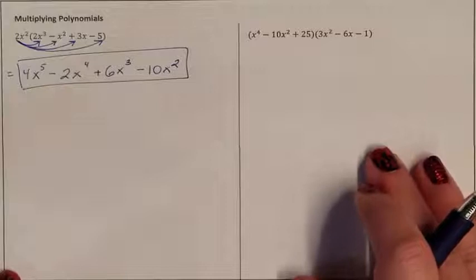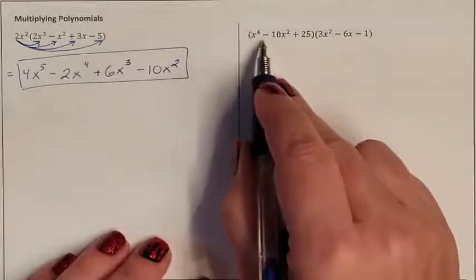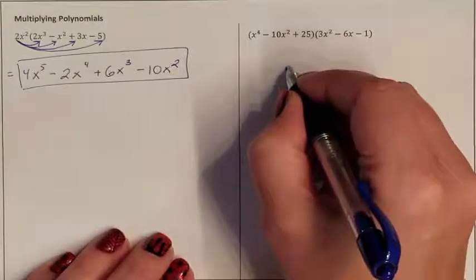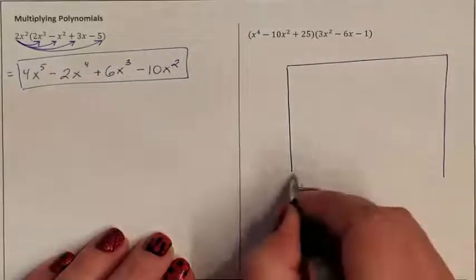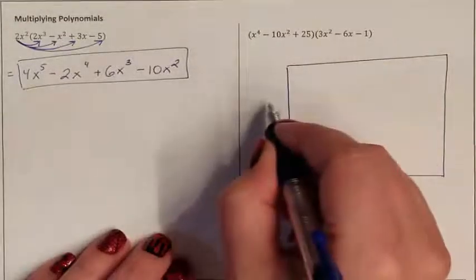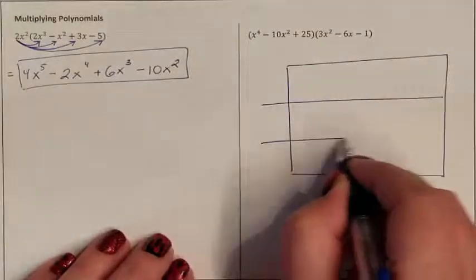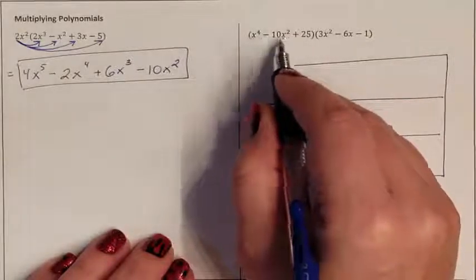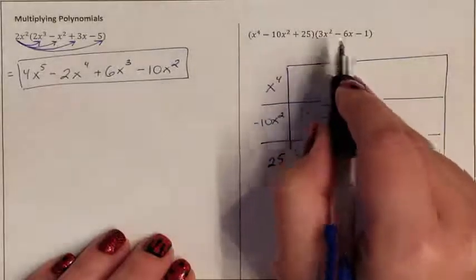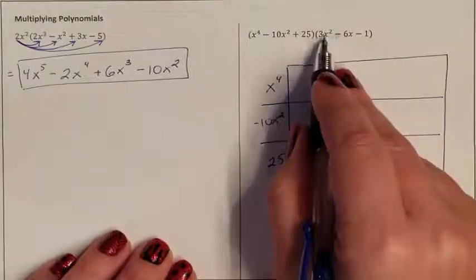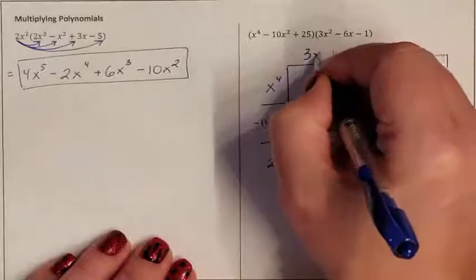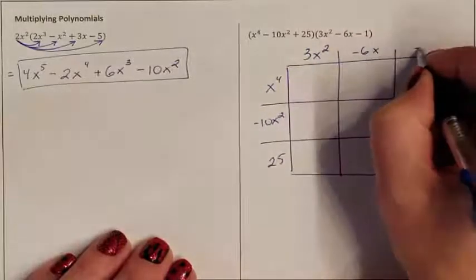I'm going to solve this other problem using the area model. When I have large polynomials being multiplied by large polynomials, it's easier to use the area model because I guarantee I don't lose track of things. The first parenthesis is the first side — there are three terms, so I split it into three parts: the x to the fourth term, the negative 10x squared term, and the positive 25 term. The second parenthesis represents the second side with three terms: 3x squared, negative 6x, and negative 1.